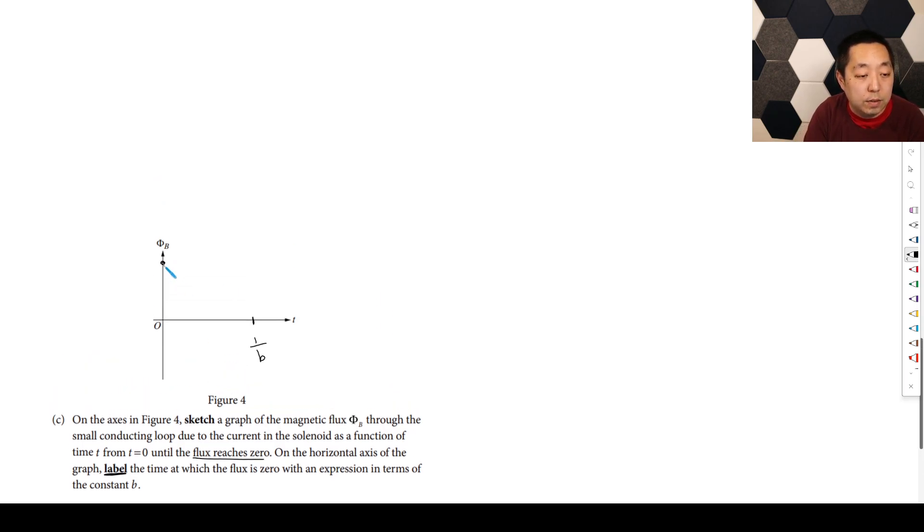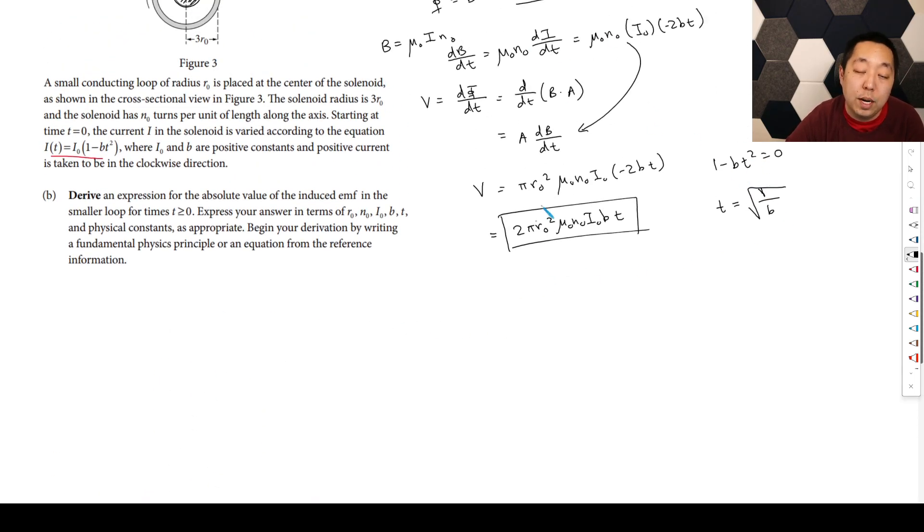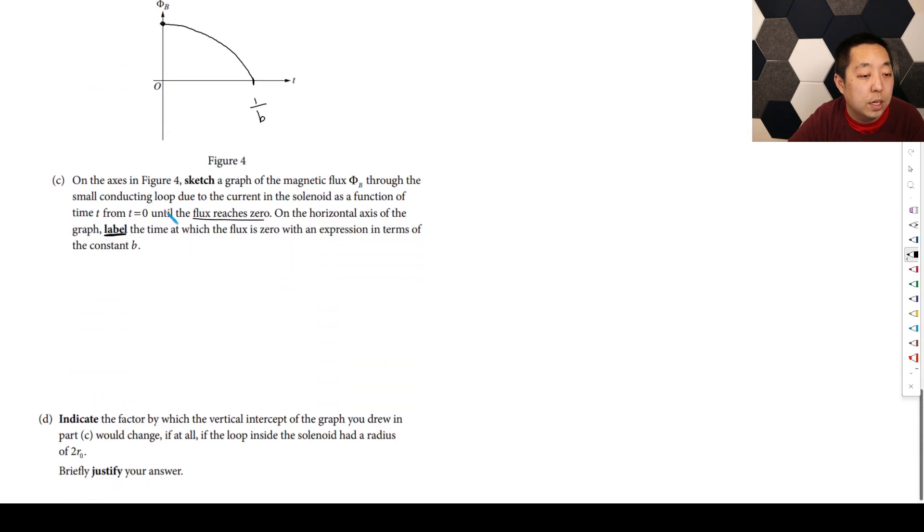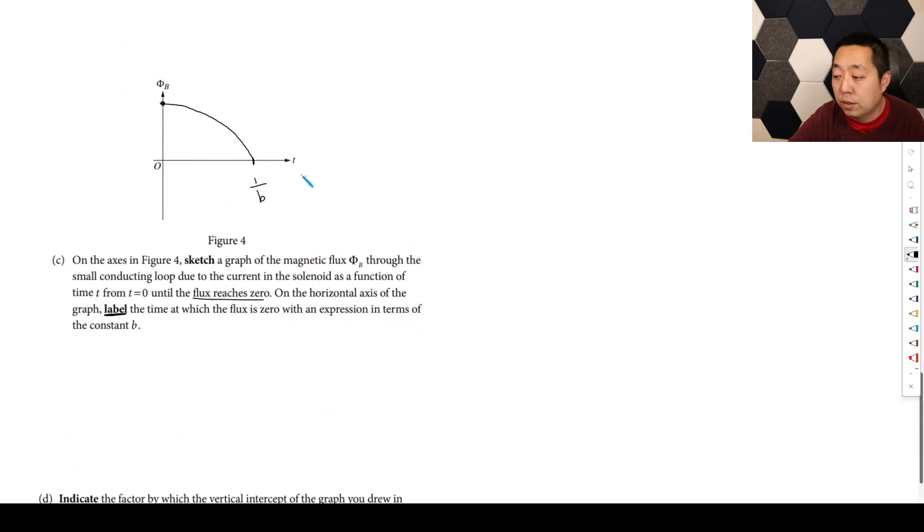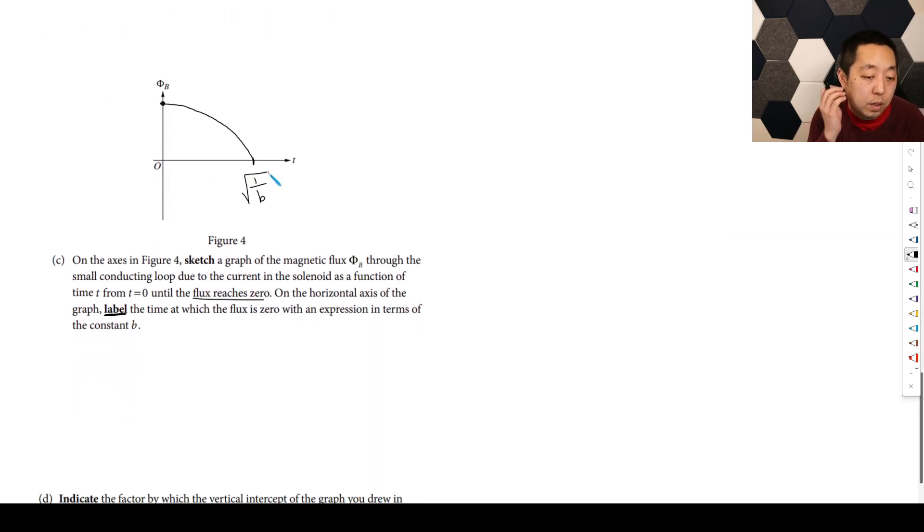So it's going to start here and it's going to kind of shrink until zero, kind of like a parabola. Oh actually, sorry, it's minus BT squared. So it's a downward facing parabola. So it actually should do this, concave down parabola like that. So that's good. And then I don't know if you need to make it cross, you just need to sketch it until the flux reaches zero. So then just label that when that's zero, and that's one over square root of B. Square root of one over B.